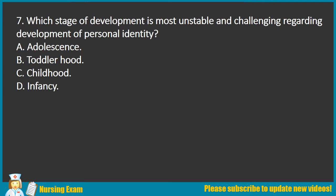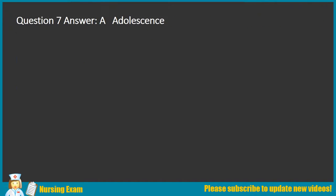Question 7. Which stage of development is most unstable and challenging regarding development of personal identity? A. Adolescence. B. Toddlerhood. C. Childhood. D. Infancy. Answer: A. Adolescence.